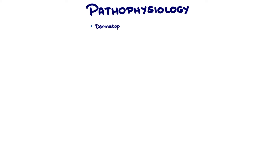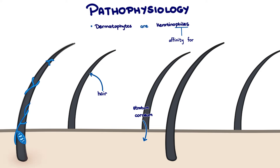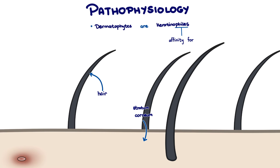Dermatophytes are keratinophiles — 'phile' meaning fondness or affinity for a thing, and keratin being that thing. So they often infect hair or the stratum corneum of the skin. The arthrospores start to grow out hyphae, which are long branching filaments, and they produce proteolytic enzymes that weaken the hair shaft and cause inflammation of the hair follicle, leading to hair loss, a common clinical sign of dermatophytosis.